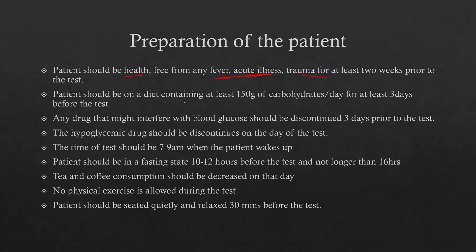The patient should be on a diet containing at least 150g of carbohydrate per day for at least 3 days. Any drug that might interfere with blood glucose should be discontinued 3 days prior to the test. Hyperglycemic drugs, for example insulin, should be discontinued on the day of the test.